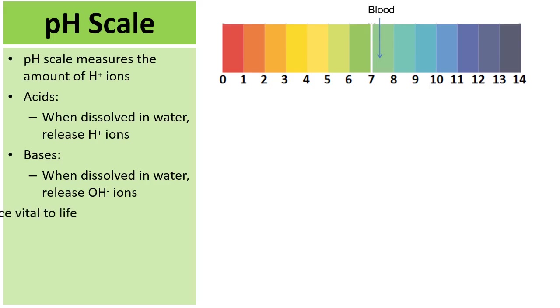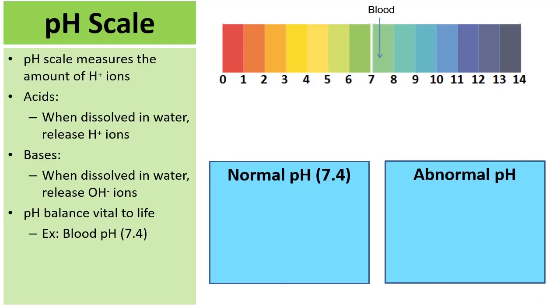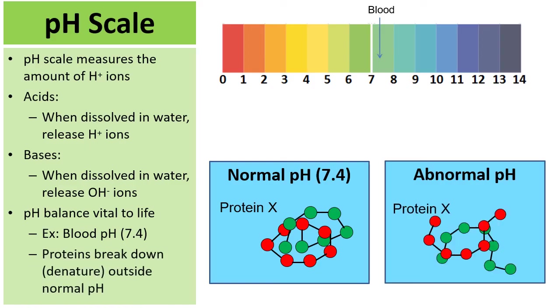So let's connect the pH scale to life. Maintaining our pH inside of our bodies is critical. Blood has a pH of about 7.4, which is a weak base. And here we have two side-by-side tables here. When our proteins are exposed to the normal pH of blood, they maintain their shape. And these proteins can perform a variety of functions in our cells. But when exposed to abnormal pH, either too high or too low, proteins begin to denature. And then we lose whatever process these proteins are a part of. So maintaining the internal balance, like our pH, is crucial to our survival.